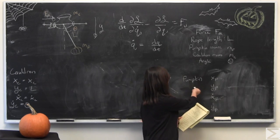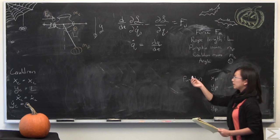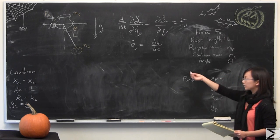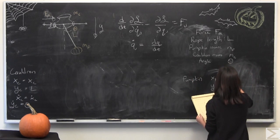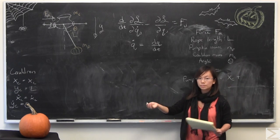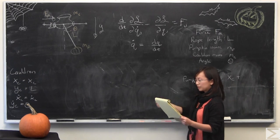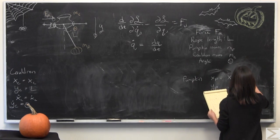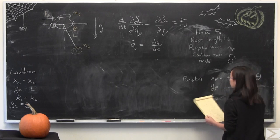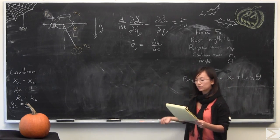I'm going to start by recognizing that the position of the pumpkin is going to depend on where the cauldron is, so it's going to depend on xc. In addition, it's going to depend on how the pendulum is swinging. If you know trig, you'd be able to see that L sine theta would describe where that x-coordinate is.